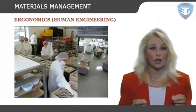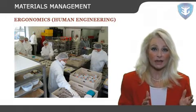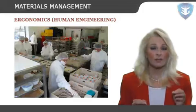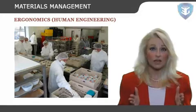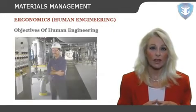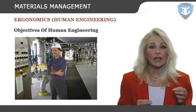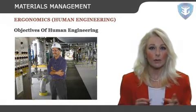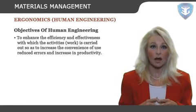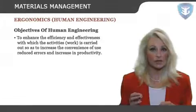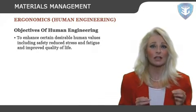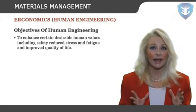Human engineering focuses on human beings and their interaction with products, equipment, facilities, and environments used in work. It seeks to change the things people use and the environment in which they use them to better match the capabilities, limitations, and needs of people. Objectives of Human Engineering: The two broader objectives are: one, to enhance the efficiency and effectiveness with which activities are carried out, increasing convenience of use, reducing errors, and increasing productivity; two, to enhance certain desirable human values including safety, reduced stress and fatigue, and improved quality of life.